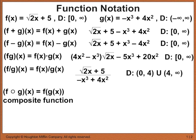Now we get into composite functions, which are a little tricky at first because one function is inside another. The notation uses a symbol that looks like an O: f composed with g of x, written F-circle-G of x, is the same as f of g of x. The way we read it is important because it gives us clues about how composite functions work.